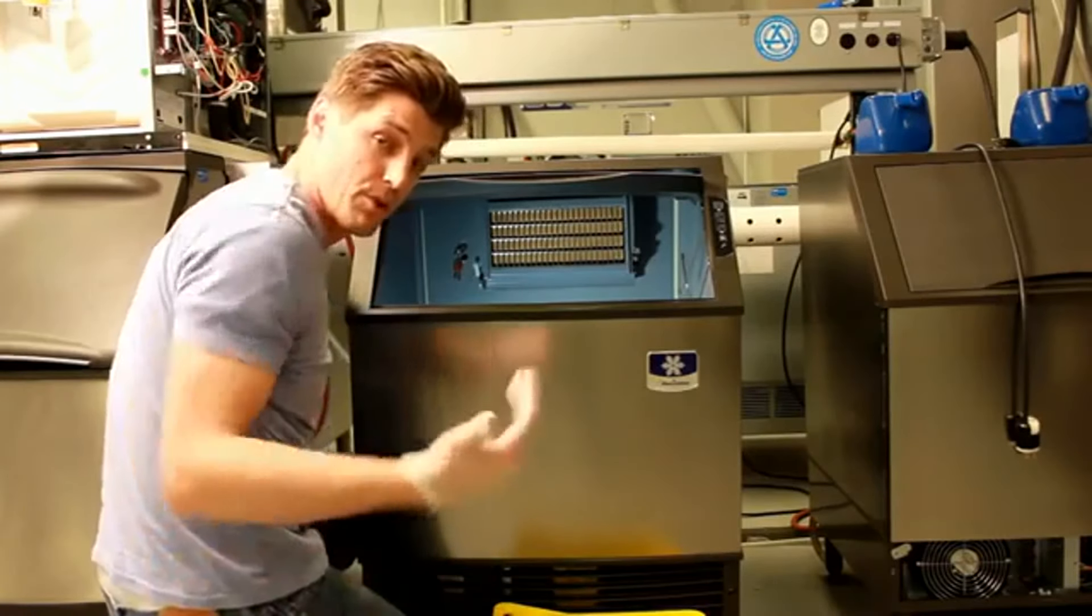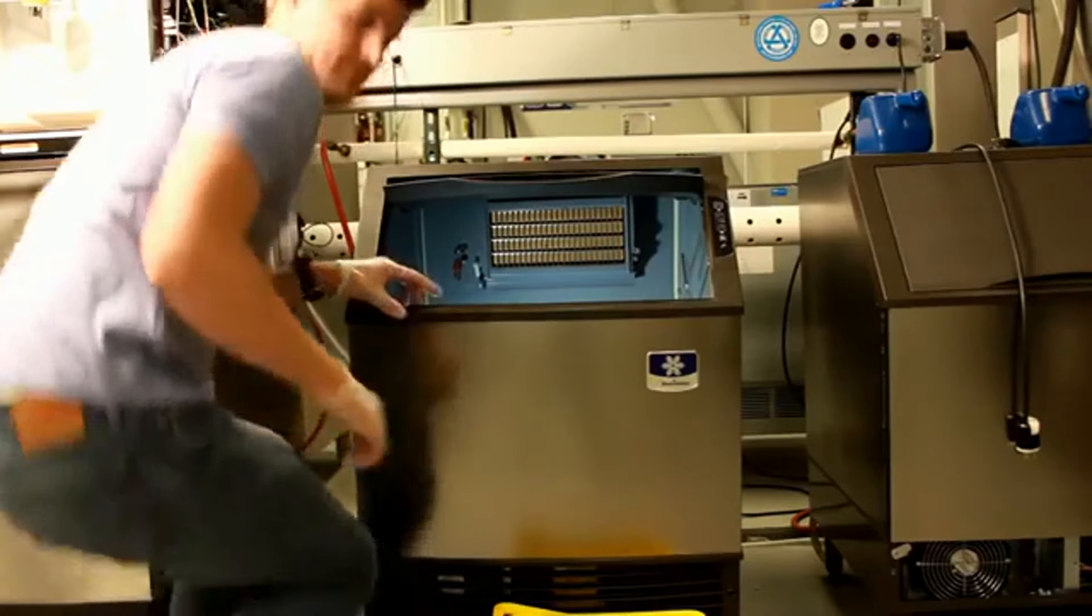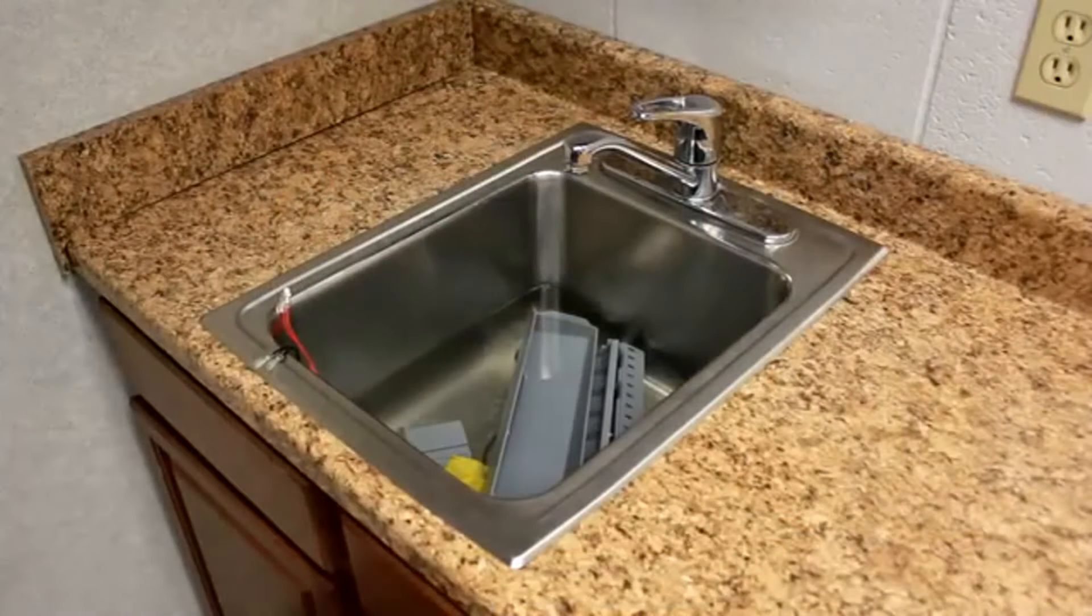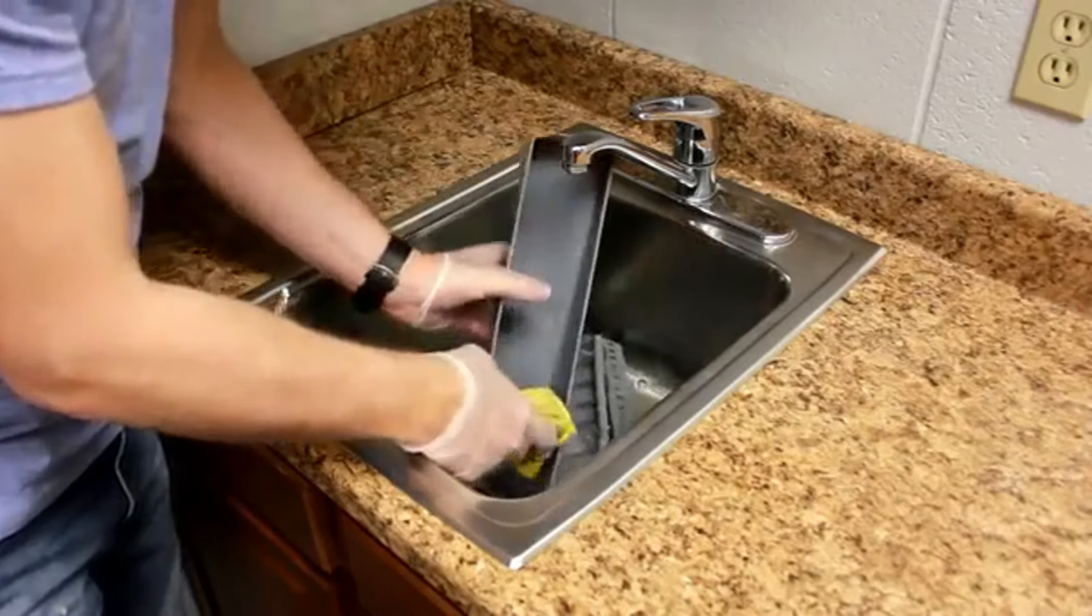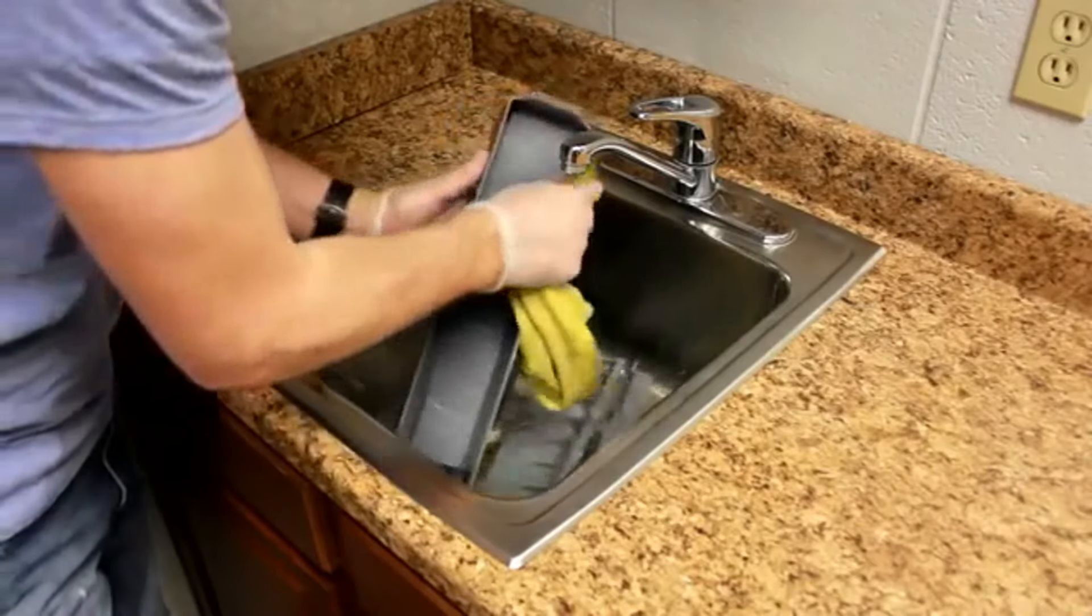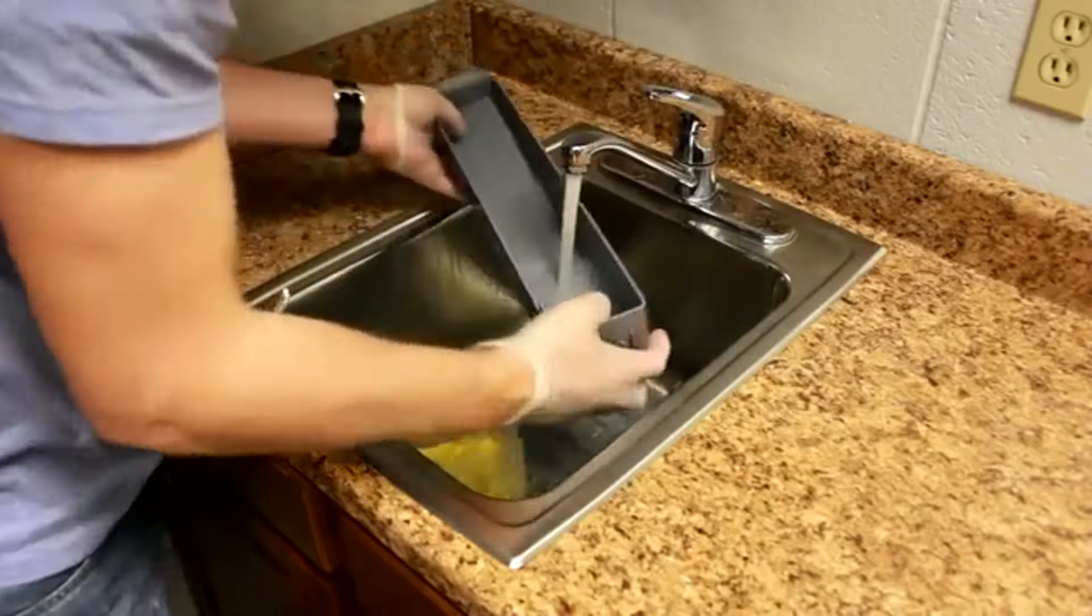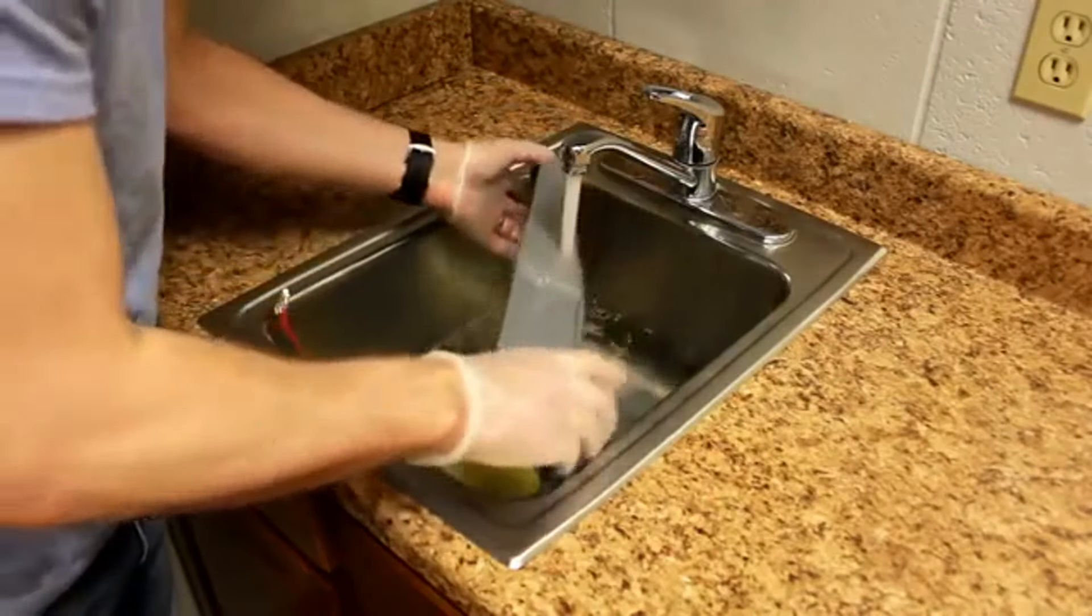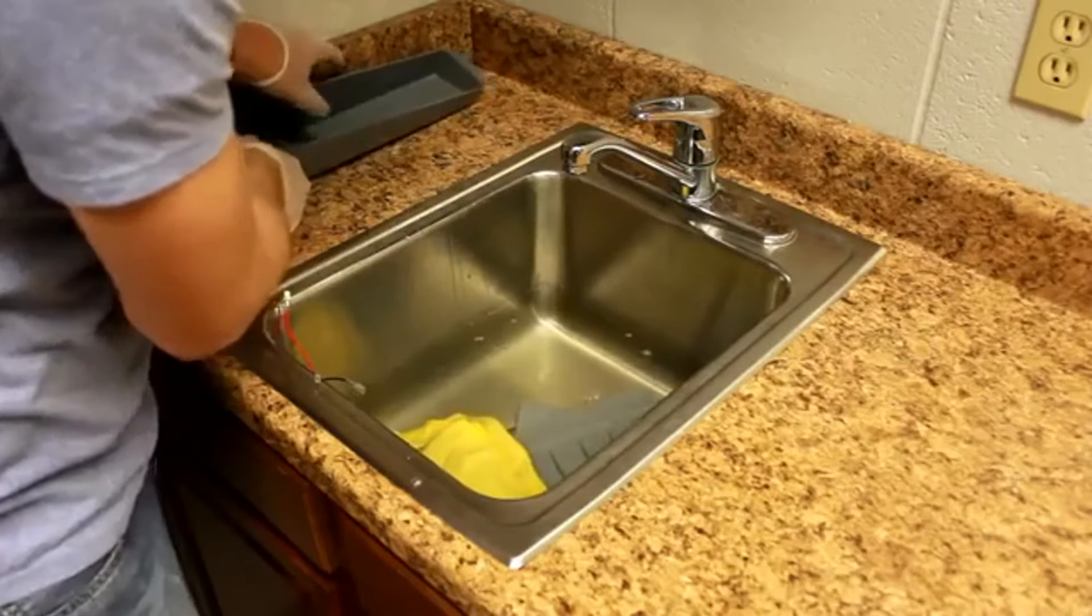Now, I'm ready to put all the components back inside and we're almost done. Now that I've let these soak for a little while, all the foaming stopped, simply pull them out of the water, wipe down each component thoroughly and then thoroughly rinse with clean water. I'll do that to each one of these and then return them to the ice machine.